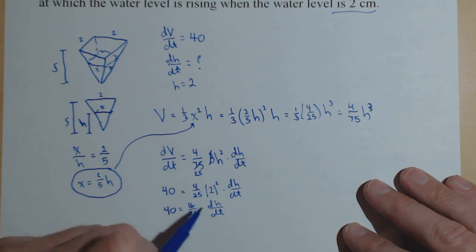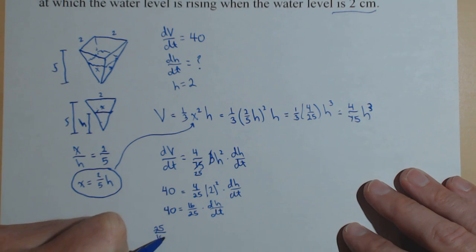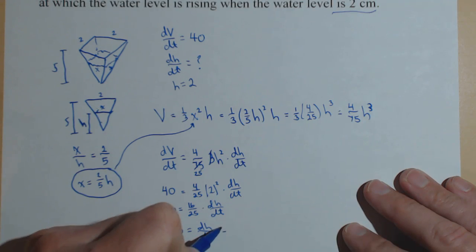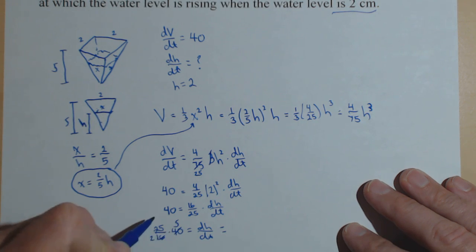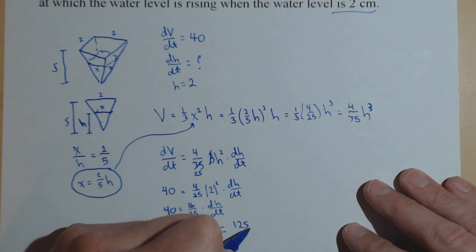Last step is to solve. We'll multiply both sides by the reciprocal. So 25 over 16 times 40 gives us our dh dt. If we multiply that out, we can simplify a little bit here. That becomes a 2, that becomes a 5. We get 125 over 2.